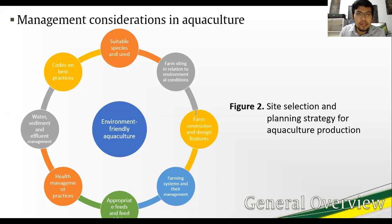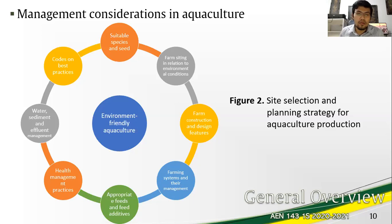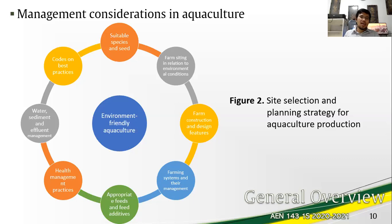In relation to the practice of aquaculture and the impacts listed, the management considerations towards environment-friendly aquaculture include: selecting suitable species and seed stock for aquatic plants; farm siting in relation to environmental conditions; farm construction and design features; farming systems and their management; appropriate feeds and feed additives; healthy management practices; water, sediment, and effluent management; and codes on best practices for all of these different considerations. All of this should be considered in establishing an environment-friendly aquaculture.